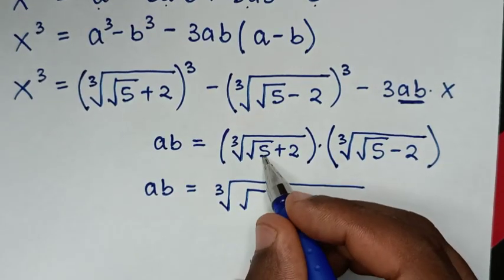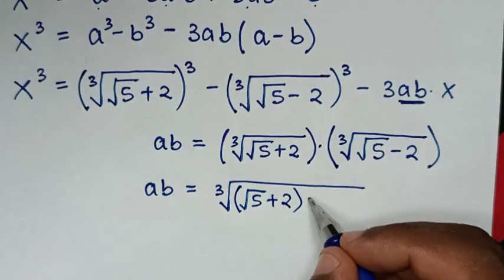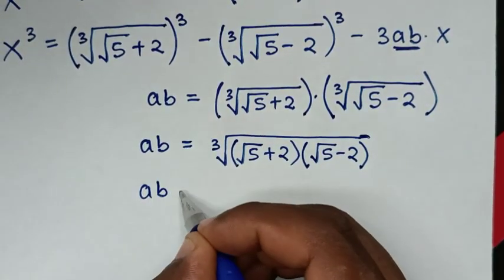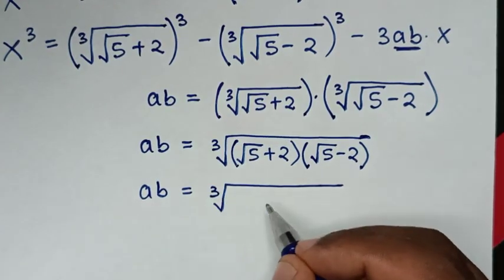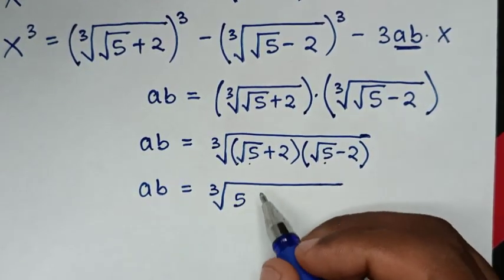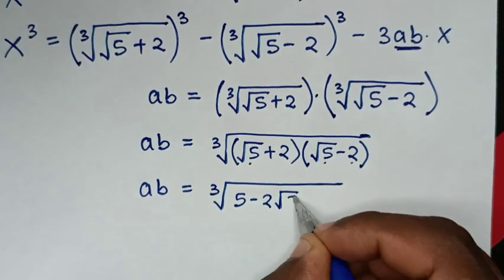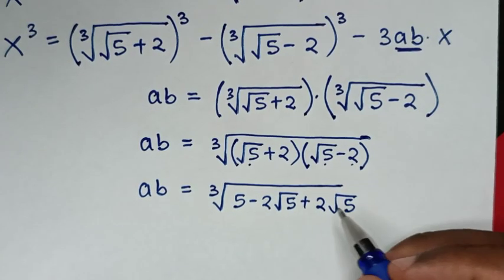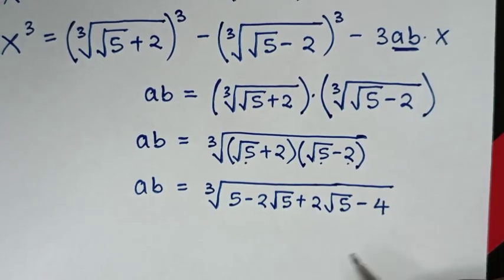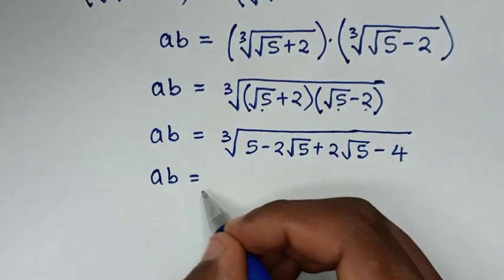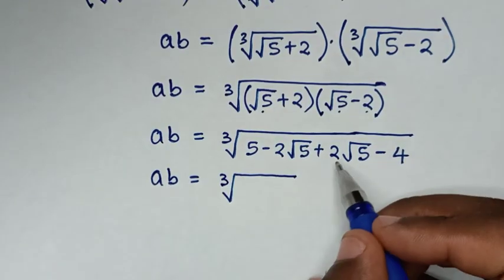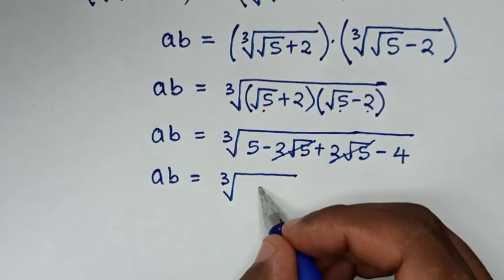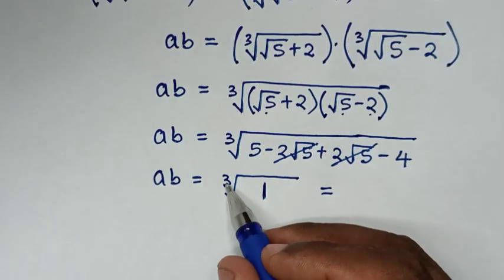So ab equals the cube root of (square root of 5 plus 2)(square root of 5 minus 2). Expanding: square root of 5 times square root of 5 is 5, the cross terms are plus 2 root 5 minus 2 root 5 which cancel to 0, and positive 2 times negative 2 is negative 4. So ab equals the cube root of (5 minus 4), which is the cube root of 1, which equals 1.